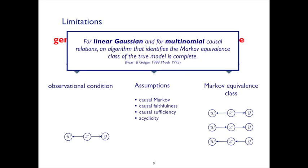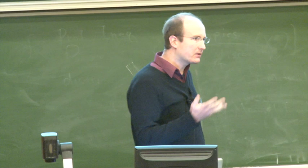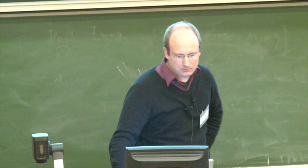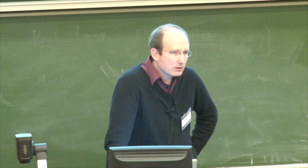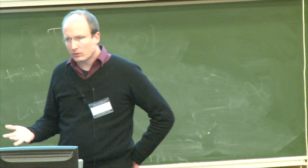Let's start with the bad news first. For linear Gaussian and for multinomial causal relations, an algorithm that identifies the Markov equivalence class under the listed assumptions is as good as it gets — it's complete. So in a certain sense, for those types of parametric assumptions, with PC and the other algorithms I mentioned, you are already getting as much causal information out as you can. This goes back to results from Verma-Geiger and from Chris Meek in the case of the multinomial relation.